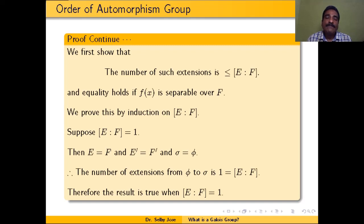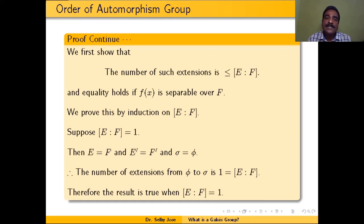When the degree of extension E over F equals 1, that means E equals F. So, E' equals F' and σ equals φ. Therefore, the number of extensions from φ to σ is 1, which equals the degree of extension E over F. So the result holds when [E:F] equals 1.